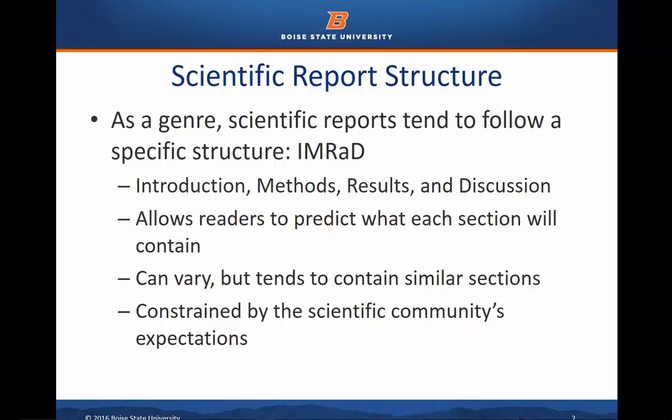This structure allows the readers to predict what will be in each section, so if you're approaching a scientific research article you'll know what each section contains and what you can expect to find. This is pretty essential for the scientific community. It also allows the reader to jump around and skip sections — if you're familiar with a particular topic you might skim or completely skip the introduction and jump straight to the results and discussion, because those are the most important sections containing the information you're most interested in.